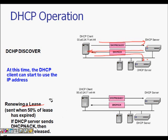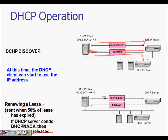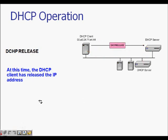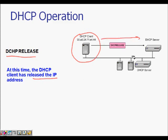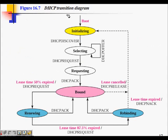For lease renewal, after 50% of the lease expires the client sends a DHCP Request to the server. If the server sends a NACK, the IP address is released. If the server sends an ACK, the lease is renewed and the client continues using the address. When the client decides to shut down, it sends a DHCP Release, and the IP address is freed.